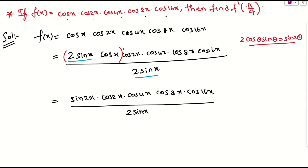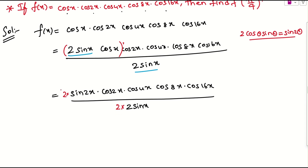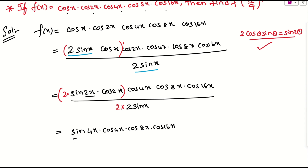Taking the first three terms again and applying the same formula — sin 2 theta where theta is 2x — this gives sin 4x. So we get sin 4x times cos 4x times cos 8x times cos 16x divided by 2 squared times sin x. Then 2 is missing again, so multiply and divide by 2.